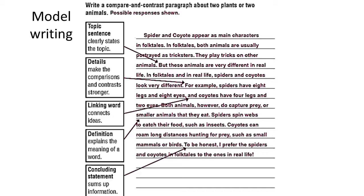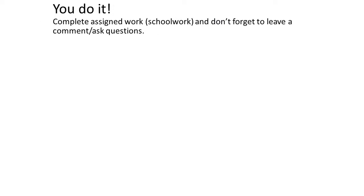When you're going to write, make sure you open your paragraph by displaying enough details for the reader to understand what exactly you are comparing and contrasting. Then don't forget to add details and linking words that are going to connect your ideas. If you're using good vocabulary, make sure you explain the meaning of a word within that sentence. And last but not least, include a concluding statement that sums up the information. I'm going to add this handout into your schoolwork. You can either use the same animals but construct your paragraph yourself — no copy-pasting — or you can choose different animals. I'll post a website in today's post so you can research numerous animals and then choose two to compare and contrast. Best of luck, Grade 3!